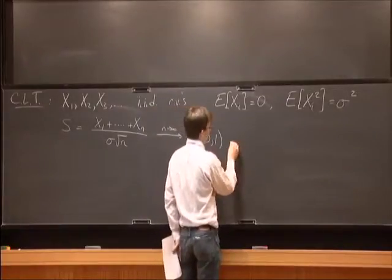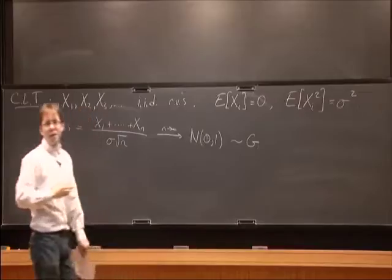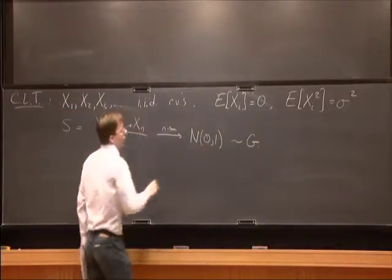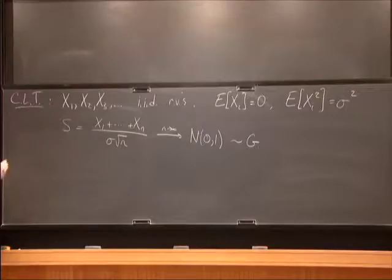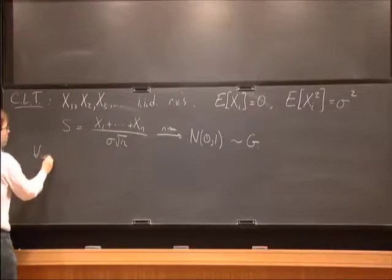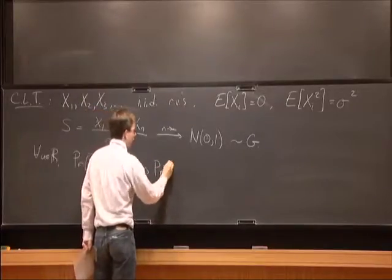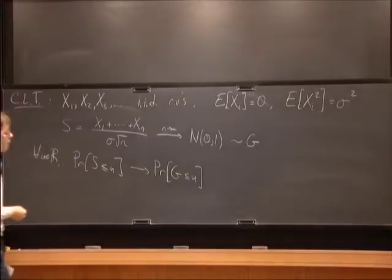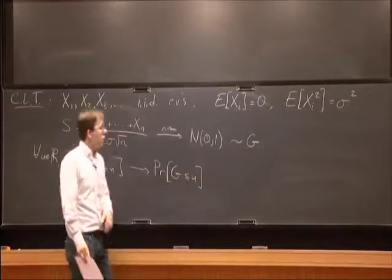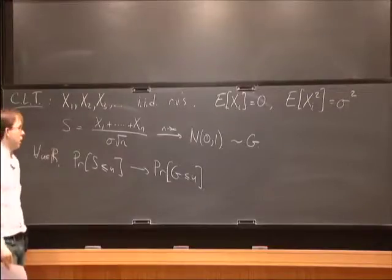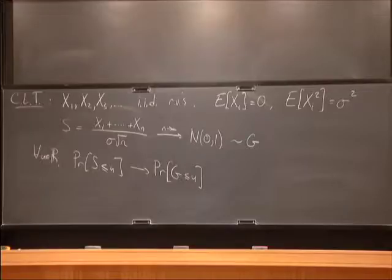What does convergence mean here? It means the CDFs converge pointwise: for all real numbers u, the probability that S is less than or equal to u converges to the probability that a Gaussian is less than u. This is a somewhat explicit quantity because we know the density of a Gaussian. This theorem can definitely be strengthened in a lot of ways, and we'll need to do that.